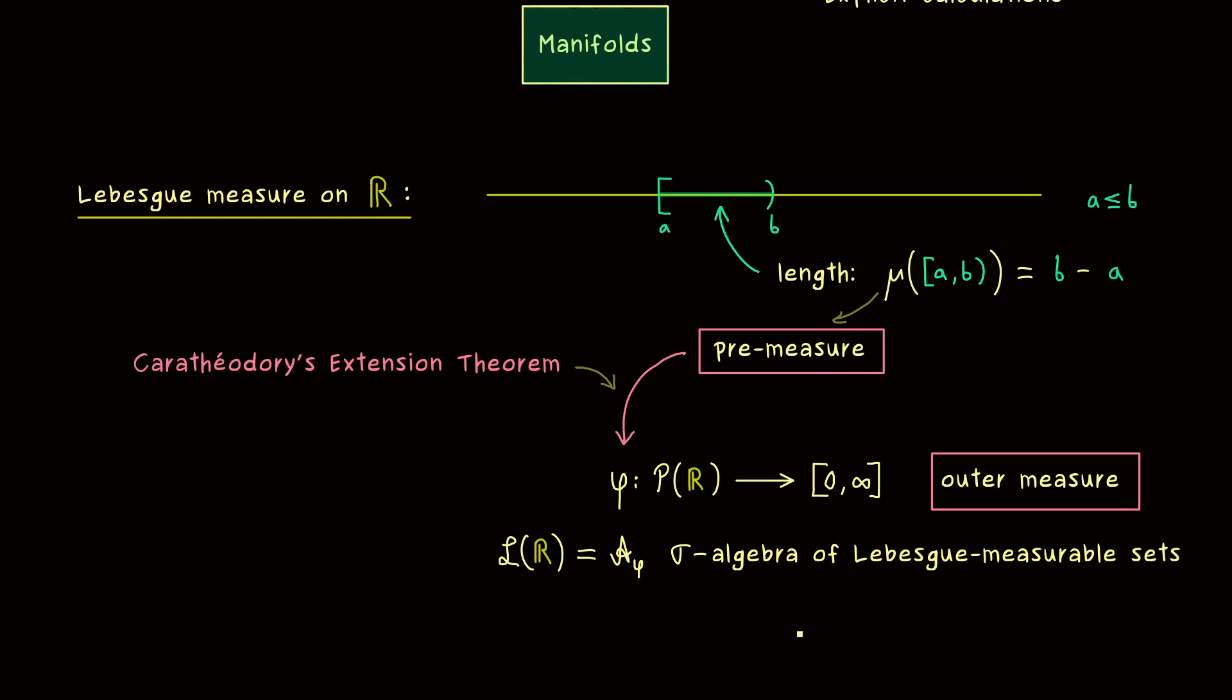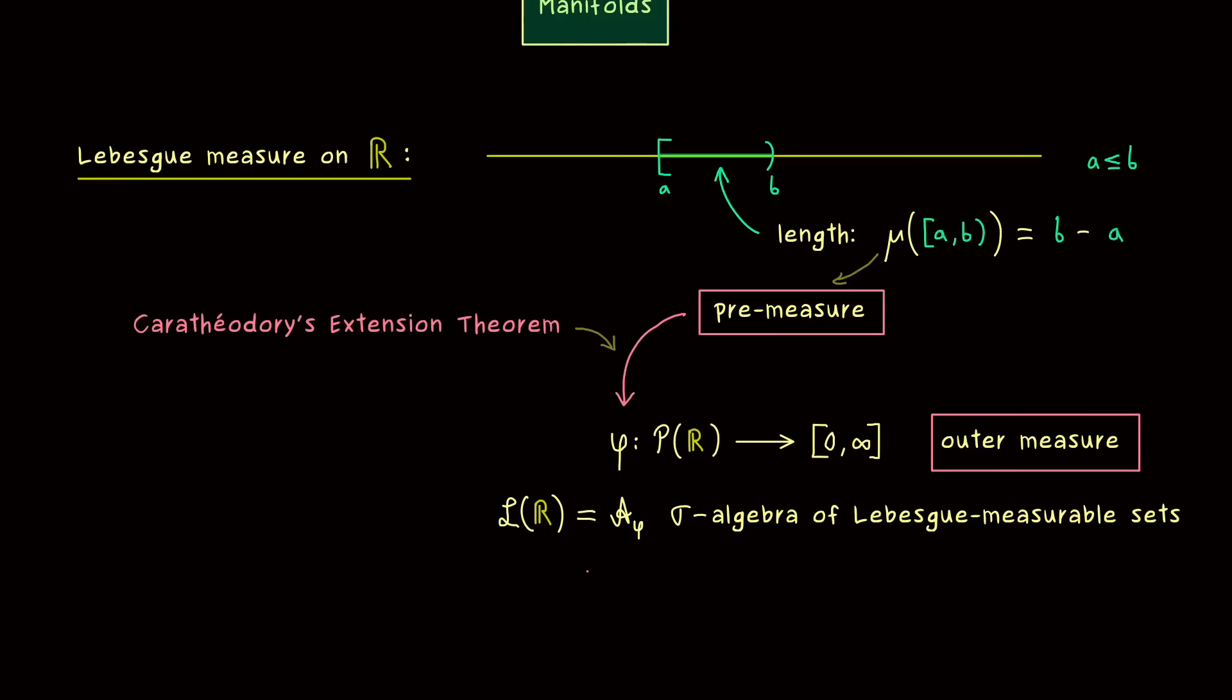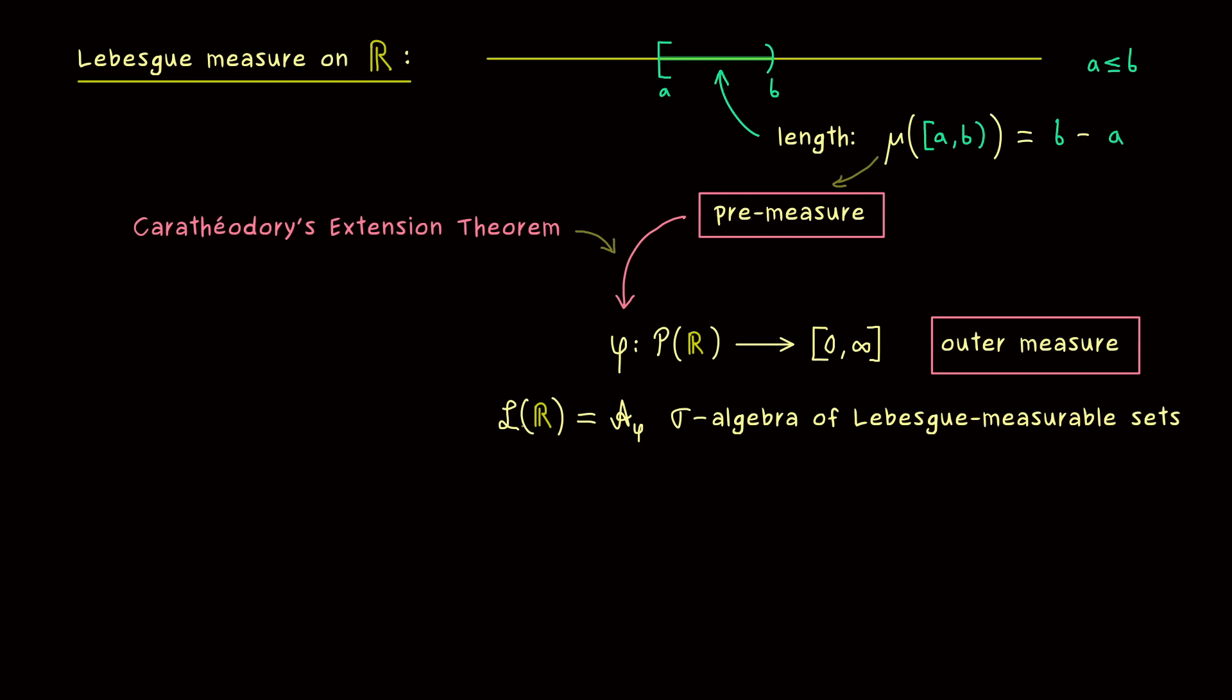However, the good thing is that they usually don't occur in applications. So all the sets we want to measure, we can find in L of R. Okay, and now I should tell you that this whole procedure here with pre-measure and outer measure leads us to a proper measure in the end.